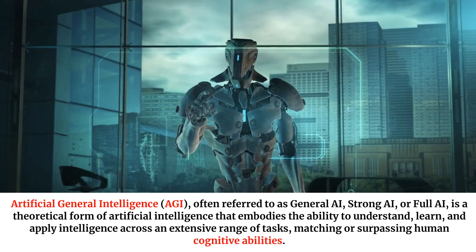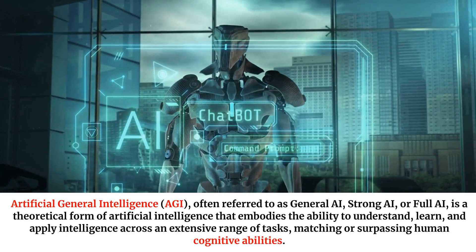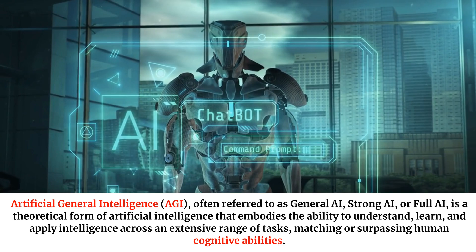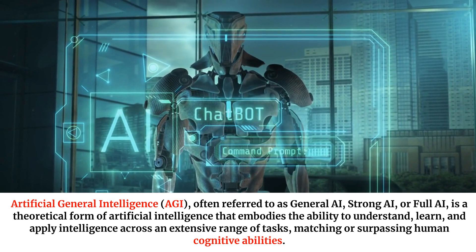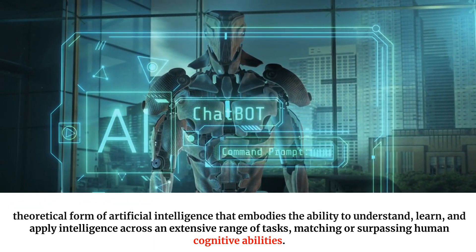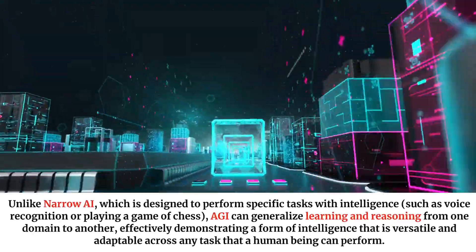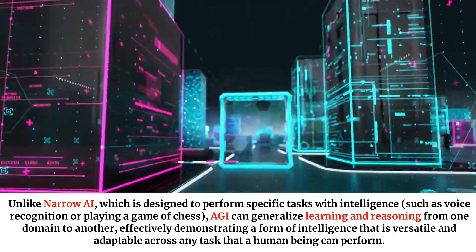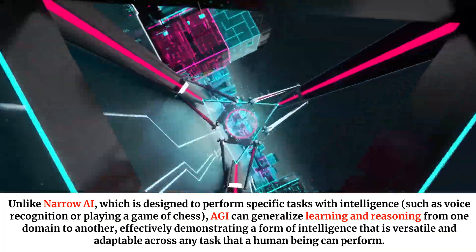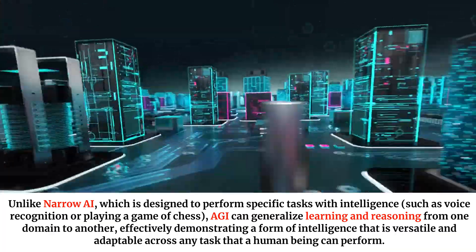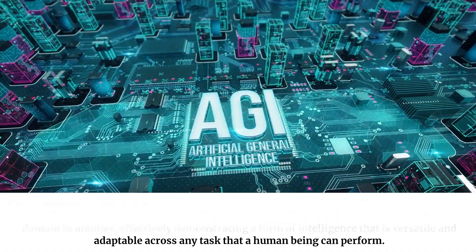Artificial general intelligence, AGI, often referred to as general AI, strong AI, or full AI, is a theoretical form of artificial intelligence that embodies the ability to understand, learn, and apply intelligence across an extensive range of tasks, matching or surpassing human cognitive abilities. Unlike narrow AI, which is designed to perform specific tasks with intelligence — such as voice recognition or playing a game of chess — AGI can generalize learning and reasoning from one domain to another, effectively demonstrating a form of intelligence that is versatile and adaptable across any task that a human being can perform.